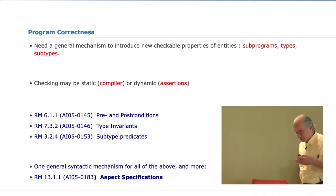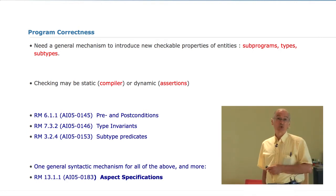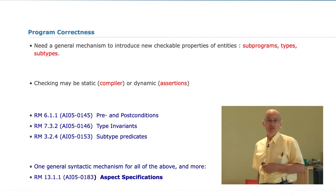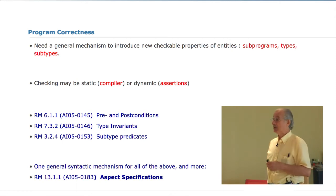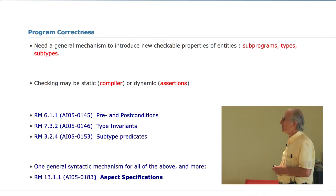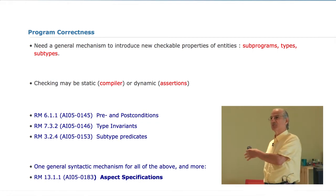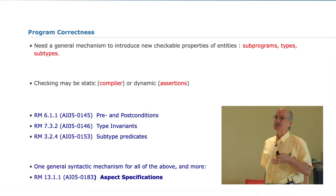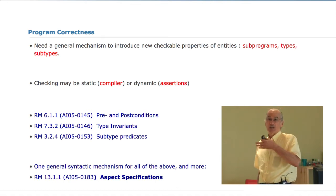The big issue — the thing that I think we can make the most out of in terms of indicating the interest of the language — is everything that has to do with program correctness. There is a general mechanism to describe the intent of the program, addressing subprograms, types, and subtypes through three different mechanisms. These are a general form of assertion: I say that when this procedure is called, the following variable will be updated in the following way, or I guarantee that whenever an object of this type is constructed, all its internal components are less than seven.